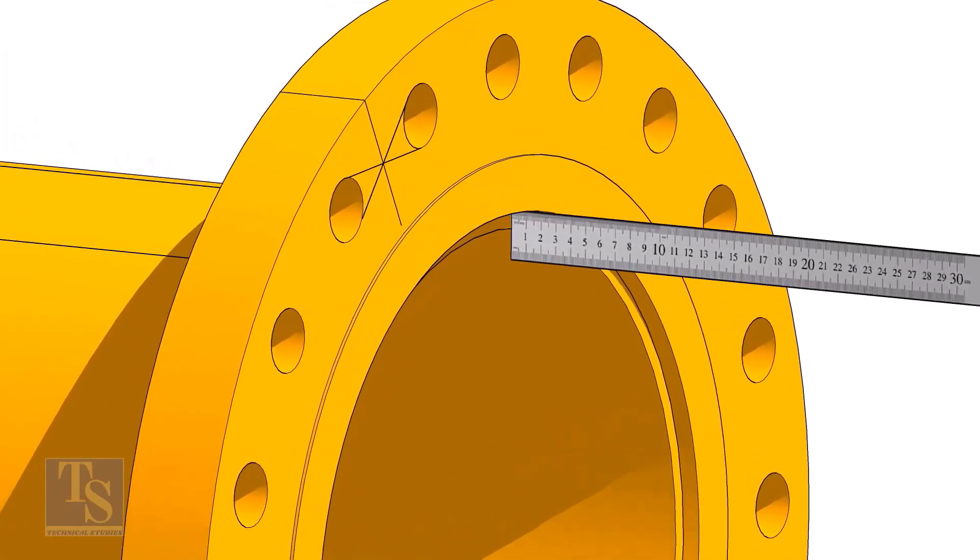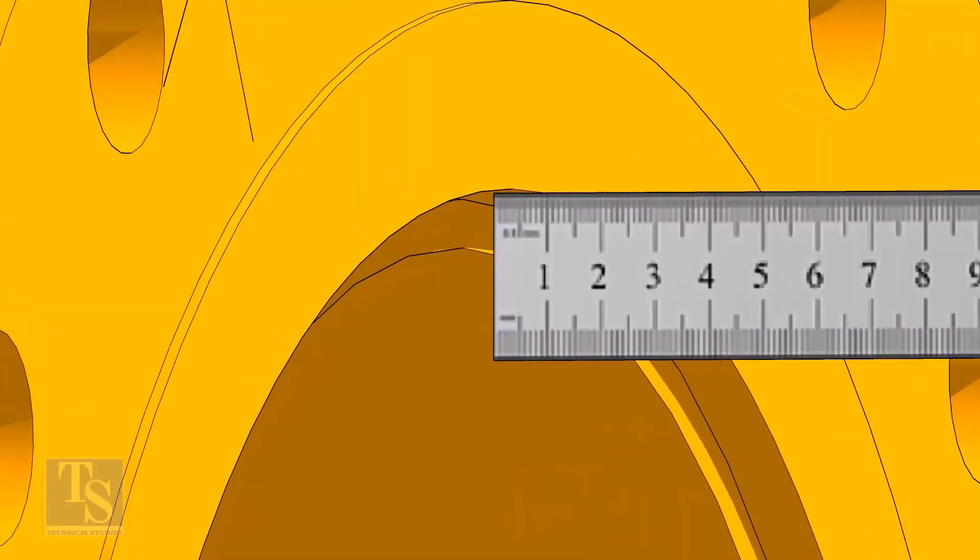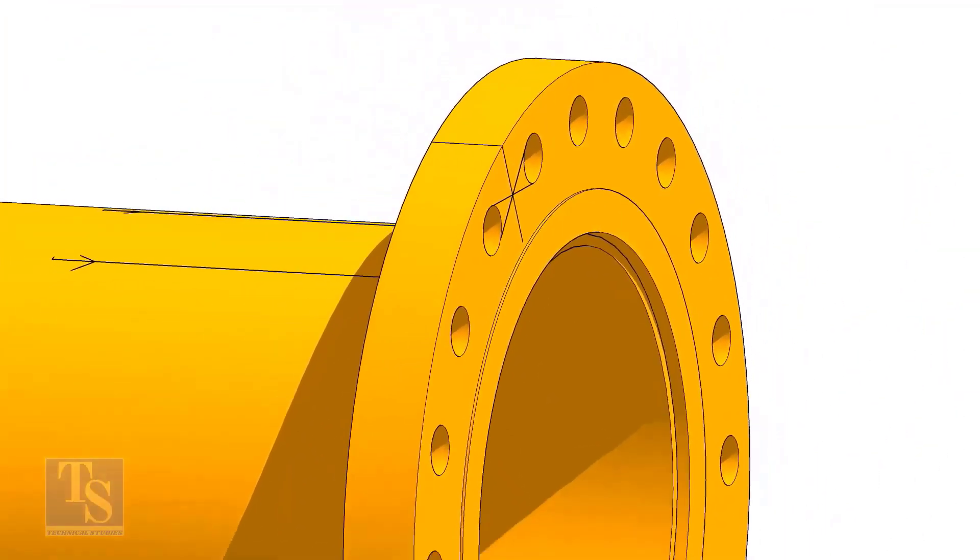Fix the distance between the flange face and the pipe face. Usually, this measurement is equal to the thickness of the pipe.